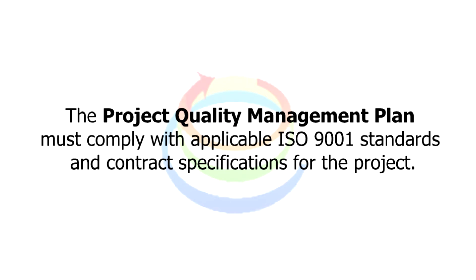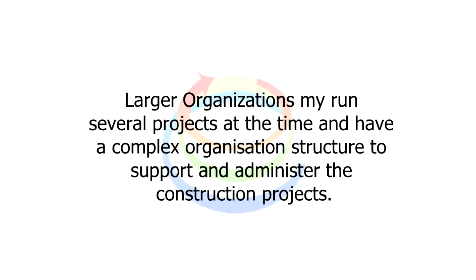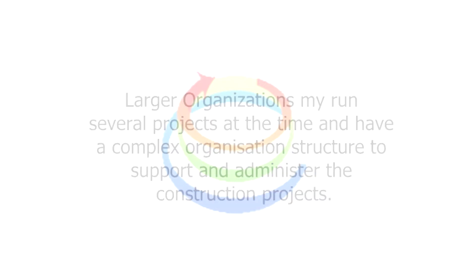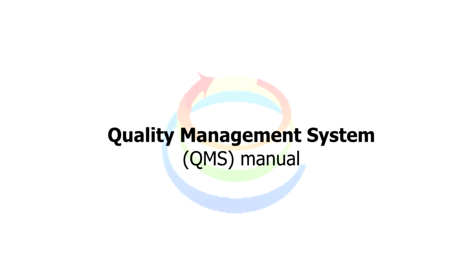The Project Quality Management Plan must comply with applicable ISO 9001 standards and contract specification for the project. Larger organizations may run several projects at a time and have a complex organization structure to support and administer the construction projects. Such an organization would also need a QMS, or Quality Management System manual, describing the way the business is managed in regards to quality management and ensuring procedures are in place to warrant the quality standards of products or services delivered across the organization.